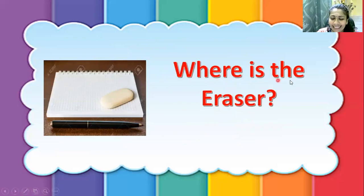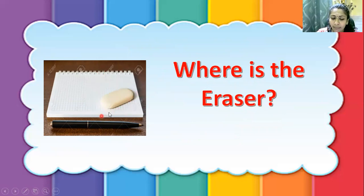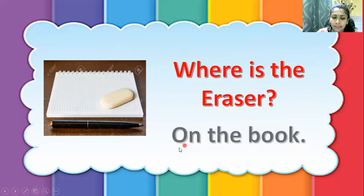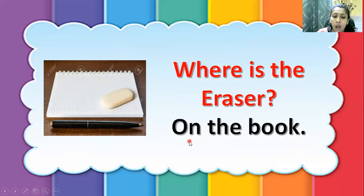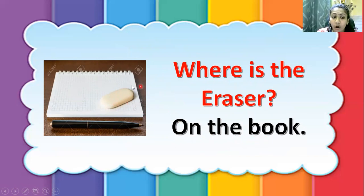Where is the eraser? Can you see the white color object? It's on the book. See the answer: On the book. So 'on' is a preposition, and I locate it on the book. Understand?